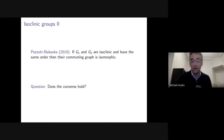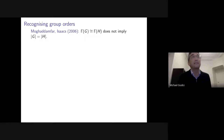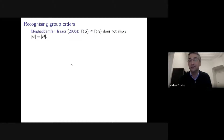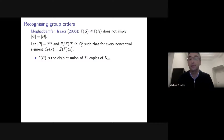Well, the groups don't even need to have the same order. This was shown by Moghaddamfar and Isaacs in 2006: groups with isomorphic commuting graphs do not need to have equal orders.